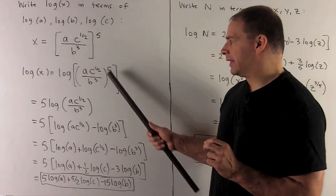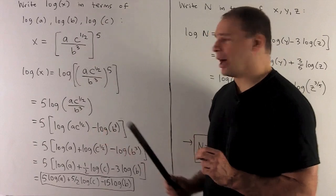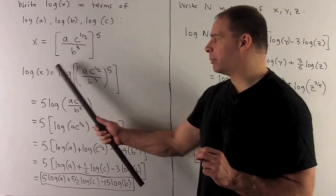First, I want to take the exponent on the outside and put it in front of the log. So that's our exponent rule for logarithm. If you have an exponent on the inside, you can bring it to the front.